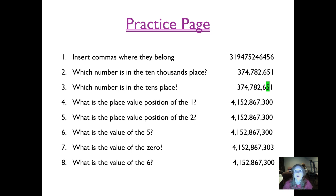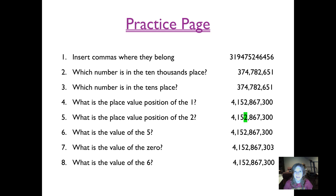Number four: what is the place value position of the one? Singing: ones, tens, hundreds, thousands, ten thousands, hundred thousands, millions, ten millions, hundred millions — that's where our one is. Hundred millions. Number five: what is the place value position of the two? Singing: ones, tens, hundreds, thousands, ten thousands, hundred thousands, millions — the two is in the millions place.